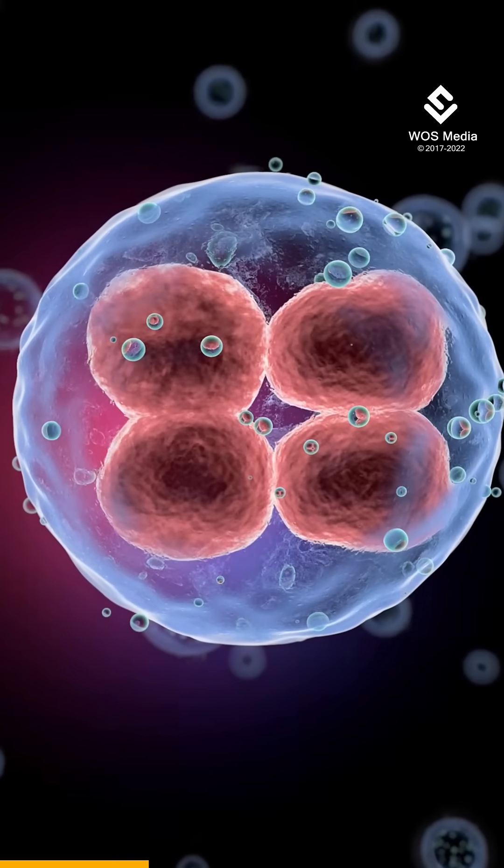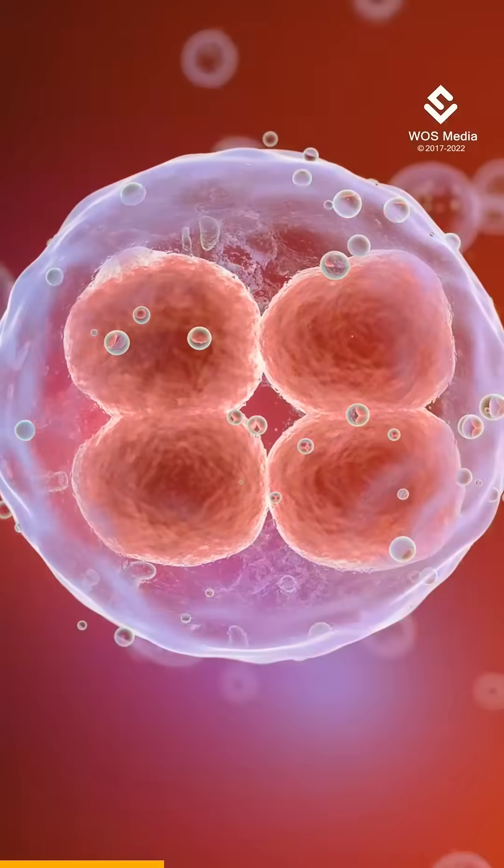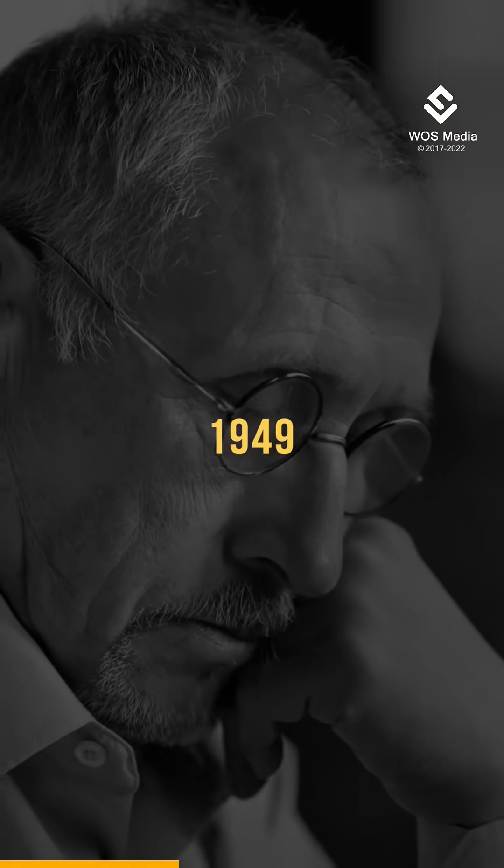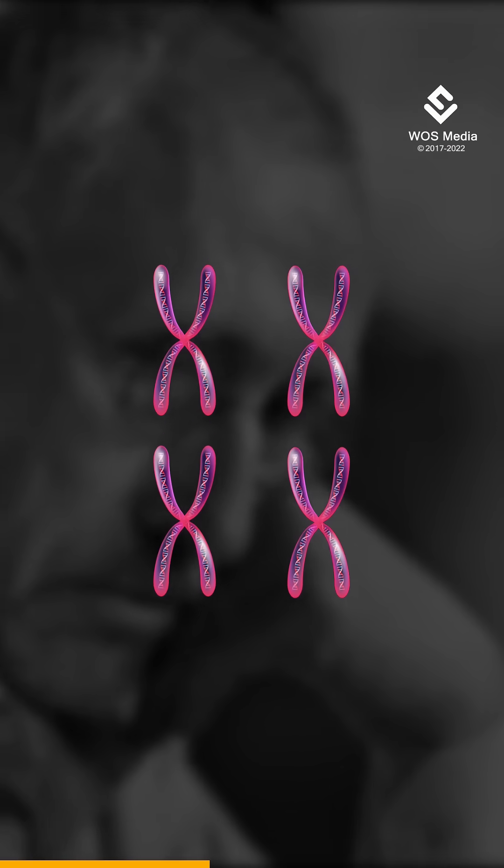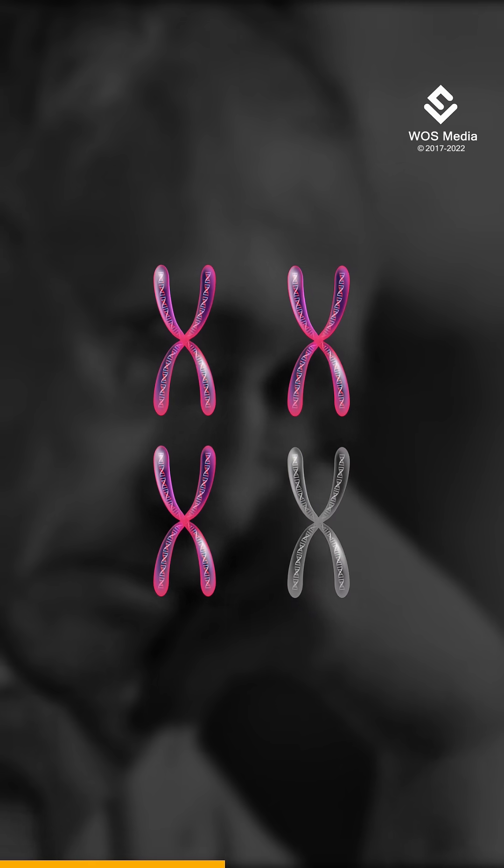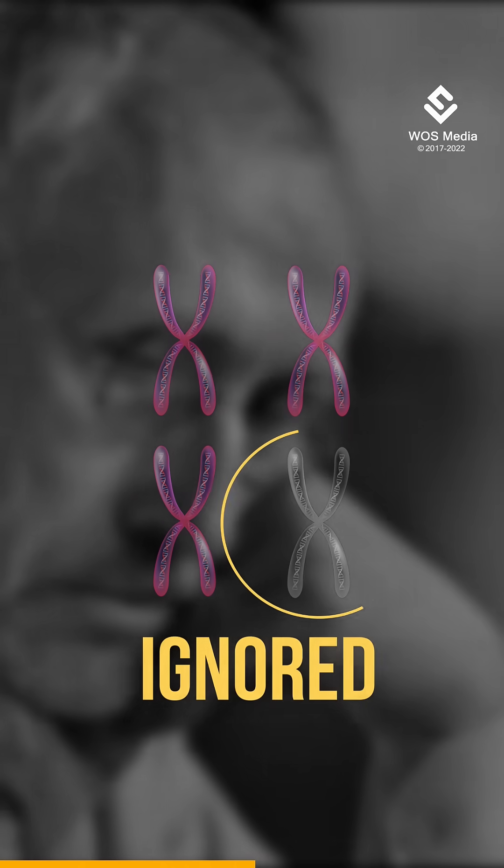Each cell in a woman's body has copies of both X chromosomes. Starting in 1949, a sequence of discoveries led to the realization that one of those X chromosomes is always inactive and most of the genetic information on that X chromosome is ignored.